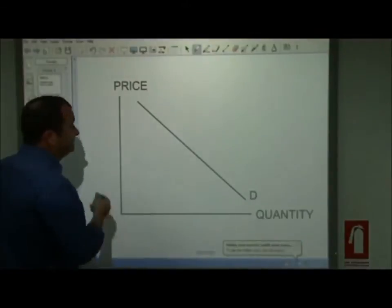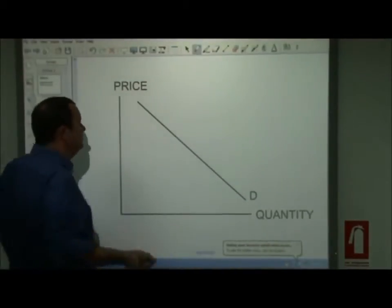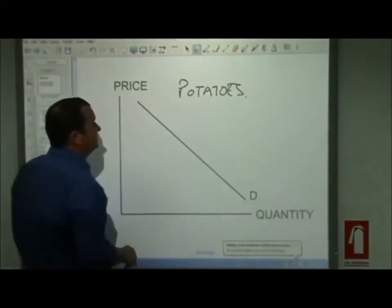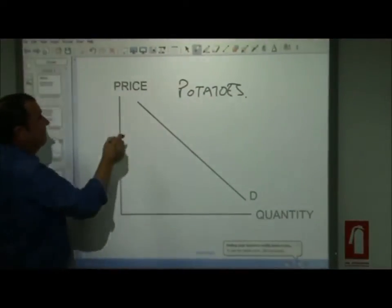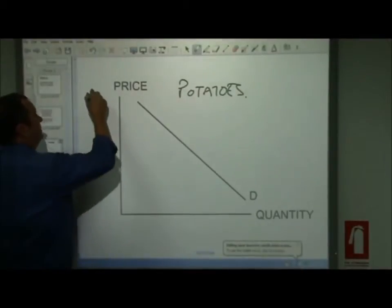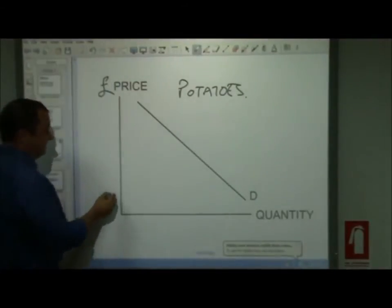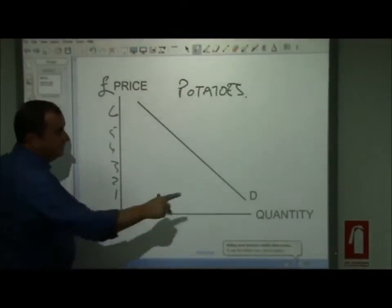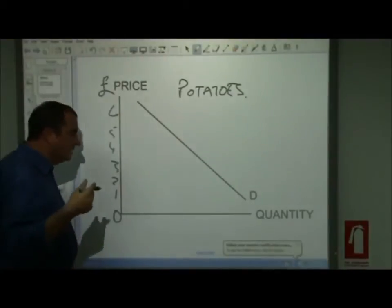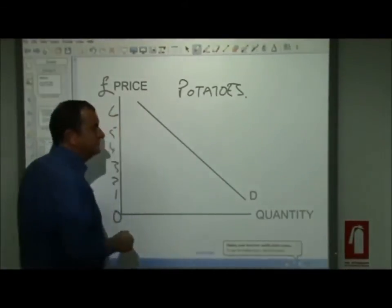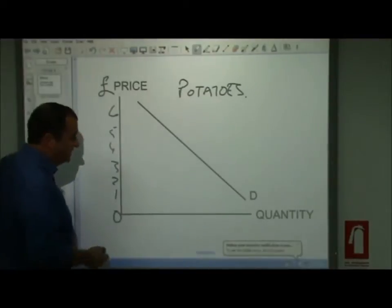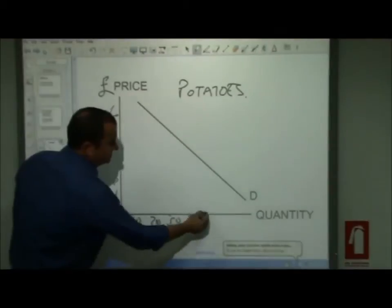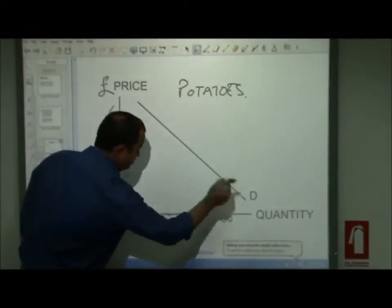Let's work with some examples. This might be a demand curve for potatoes — this is the market for potatoes. Here we have the price per kilo in pounds: one, two, three, four, five, six. And here we have the quantity in thousands of bags of potatoes that will get bought: 10, 20, 30, 40, 50, 60, and so on.